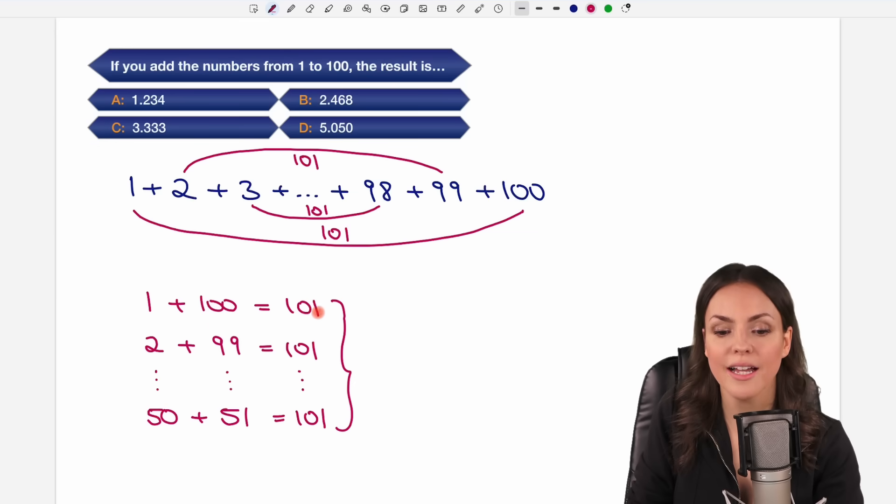And how many times do we get 101? Well it's 1, 2, 3, 4, 50 times. So we just have to multiply 50 by 101 to get our results.